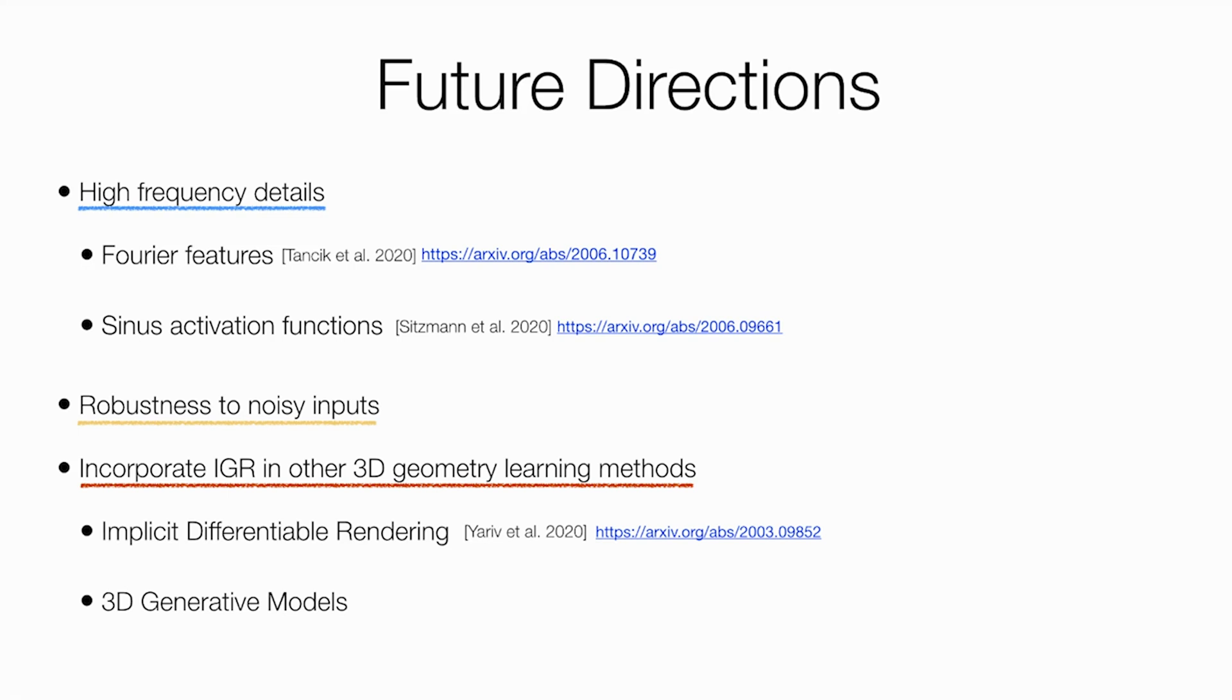IGR could also be incorporated into other 3D learning scenarios. For example, IGR was used in another recent paper by Yariv and colleagues to learn 3D geometry and material of 3D objects from 2D images. Finally, IGR could be used for training 3D generative models from raw data.